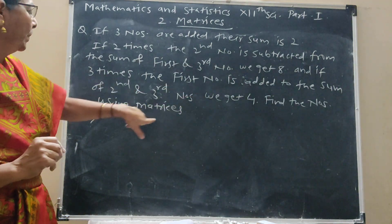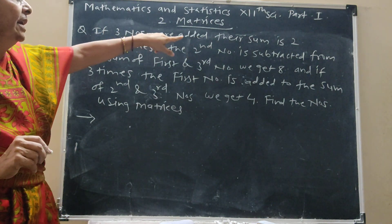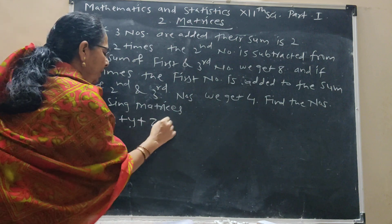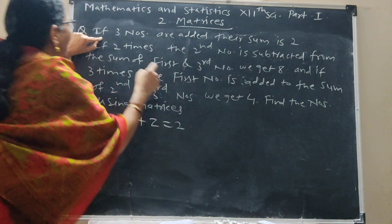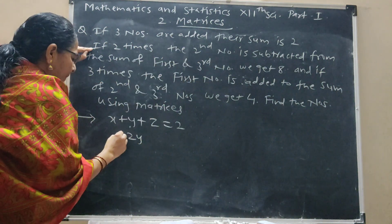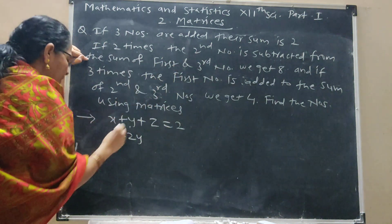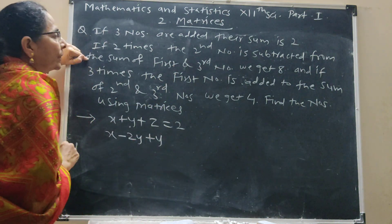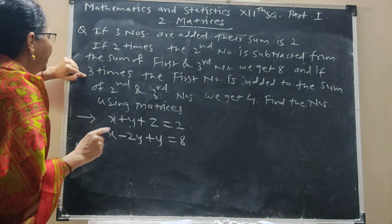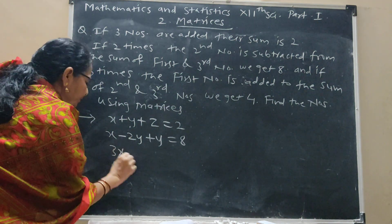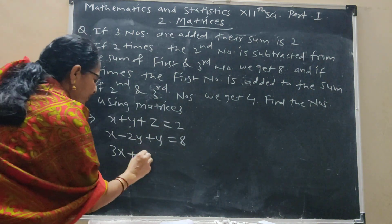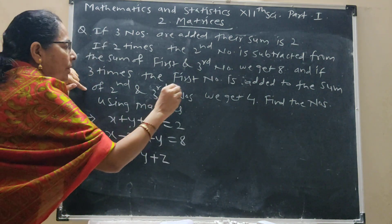This is the question. We have to find three numbers. Three numbers are added, and we take these numbers as x, y, z. So x plus y plus z is equal to 2. Then, 2 times the second number, 2y, is subtracted from the sum of the first and third, x plus z. We get 8. And if 3 times the first number is added to the sum of the second and third, y plus z, we get 4.